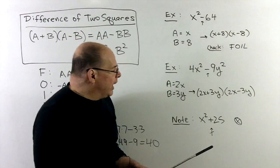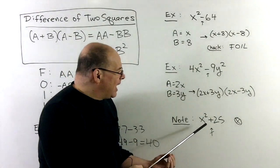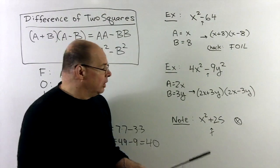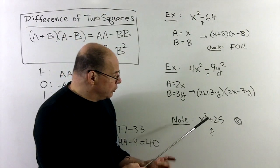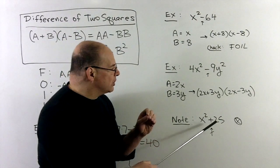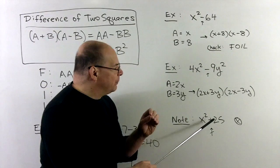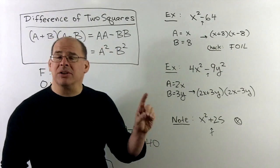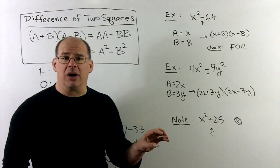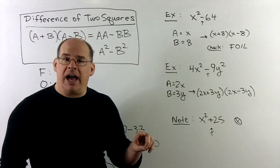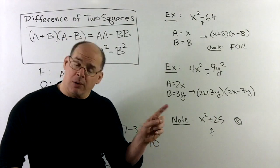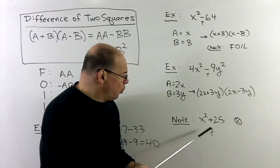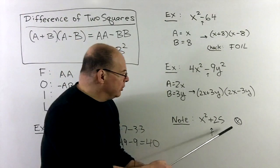Something to note: if we have something like x² + 25, you should be careful. Typically what happens is you focus on the squares and forget the minus in the middle. If it's a plus, you're not allowed to use difference of two squares. Always a good idea to check — but this we're not going to know how to factor right now.